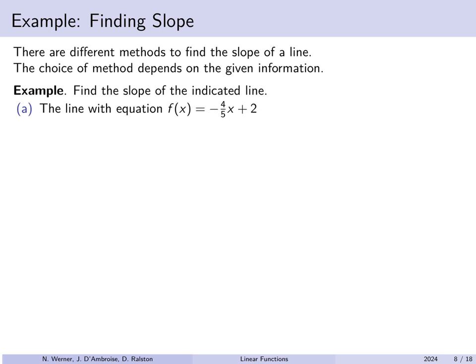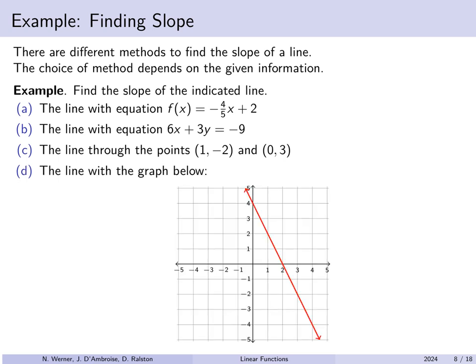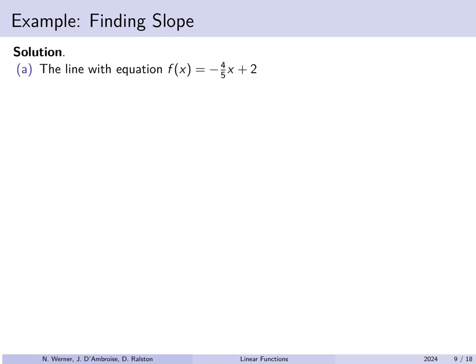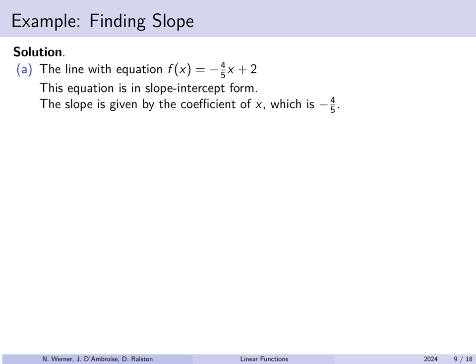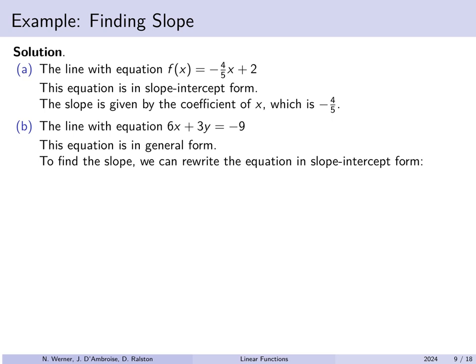Let's look at a few different cases for finding slope. First, f of x equals negative four-fifths x plus 2 is already in slope-intercept form, so the coefficient of x is the slope: negative four-fifths. Second, for 6x plus 3y equals negative 9, which is in general form, we need to convert to slope-intercept form by subtracting 6x from both sides and dividing by 3. Now we have slope-intercept form and the coefficient of x, negative 2, is the slope.